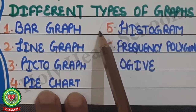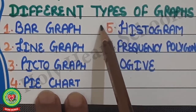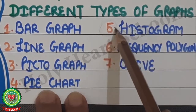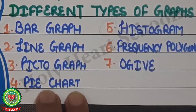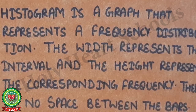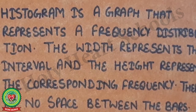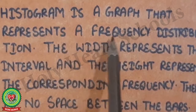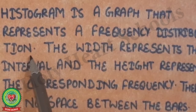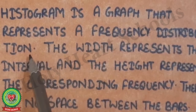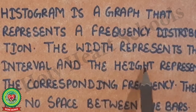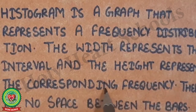Today we will talk about histogram. Before learning how to draw a histogram, let's look at the definition. A histogram is a graph that represents a frequency distribution plus interval. The width represents the class interval and the height represents the corresponding frequency.